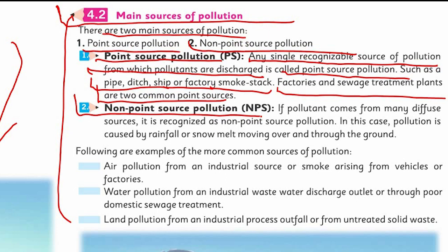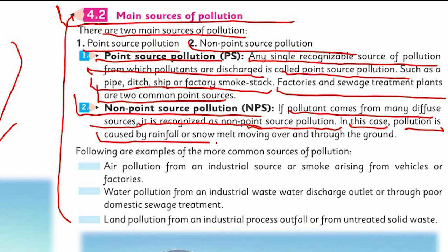Non-point source pollution (NPS): if pollutants come from many diffuse sources, it is recognized as non-point source pollution. In this case, pollution is caused by rainfall or snowmelt moving over and through the ground. For example, if garbage is scattered at different places and rainwater passes through it, the dirt gets mixed into that water. Since we cannot identify which specific sources it came from, it is called non-point source pollution or NPS.